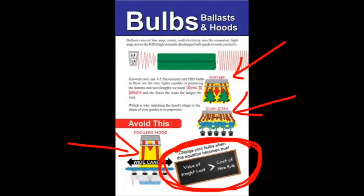However, when you're so good that you're losing six or seven grams per light per harvest, then you're losing more than the cost of a new bulb. So you replace your bulb when the value of the light lost is greater than the cost of the new bulb.